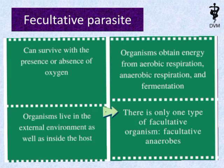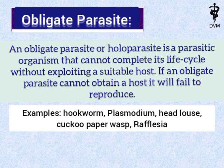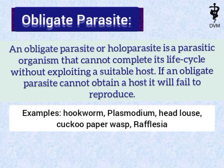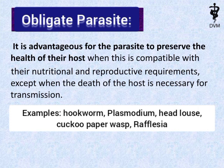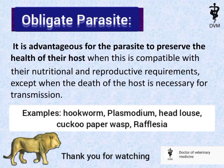These organisms can live in the external environment as well as inside the host. There is only one type of facultative parasite, which are called facultative anaerobes. An obligate parasite, or holoparasite, is a parasitic organism that cannot complete its life cycle without exploiting a suitable host. If an obligate parasite cannot obtain a host, it will fail to reproduce. Examples include hookworm, plasmodium, head louse, cuckoo, paper wasp, and rafflesia.